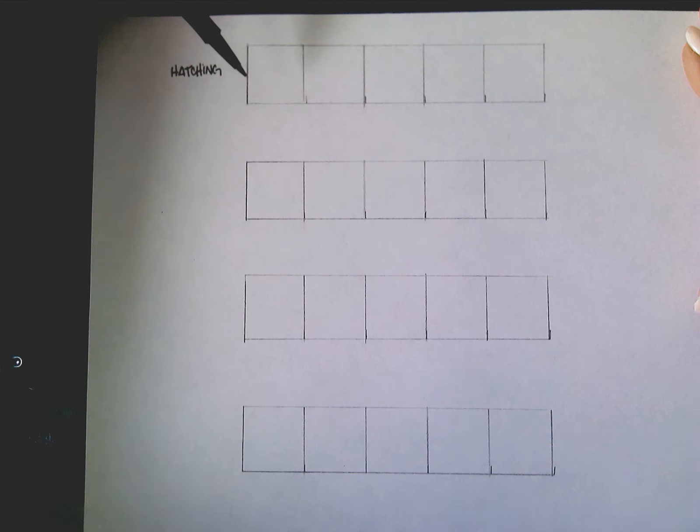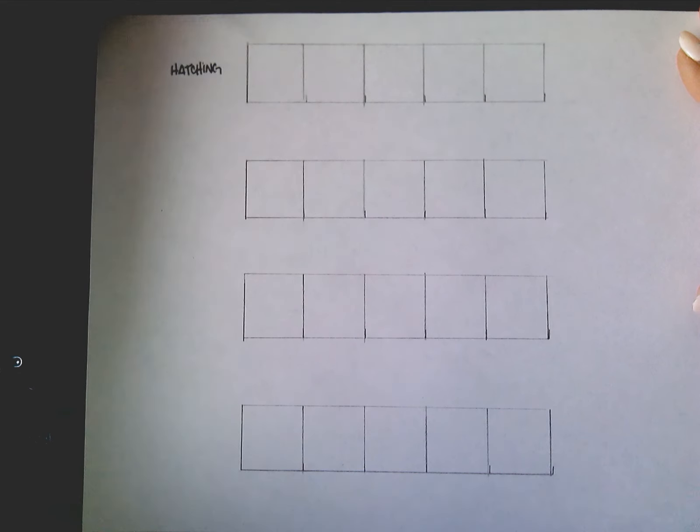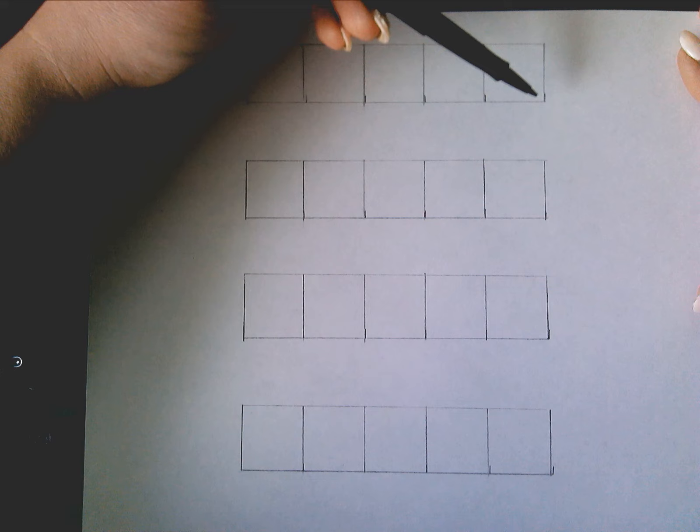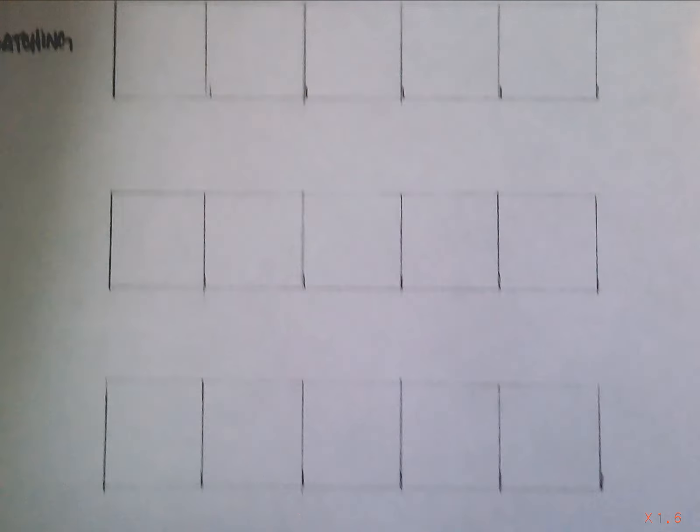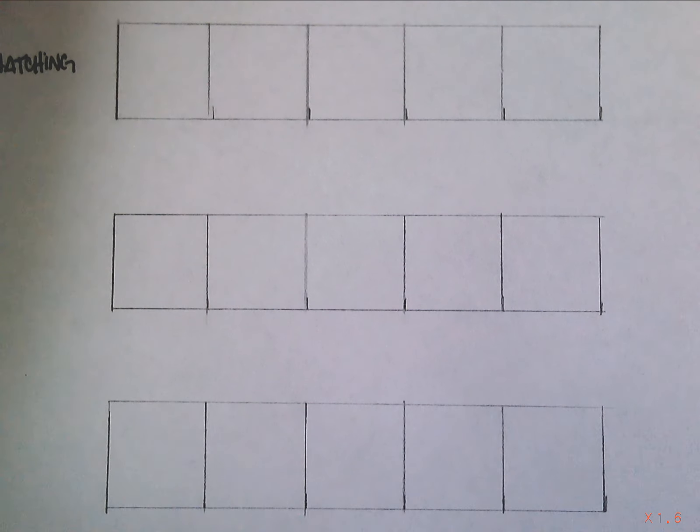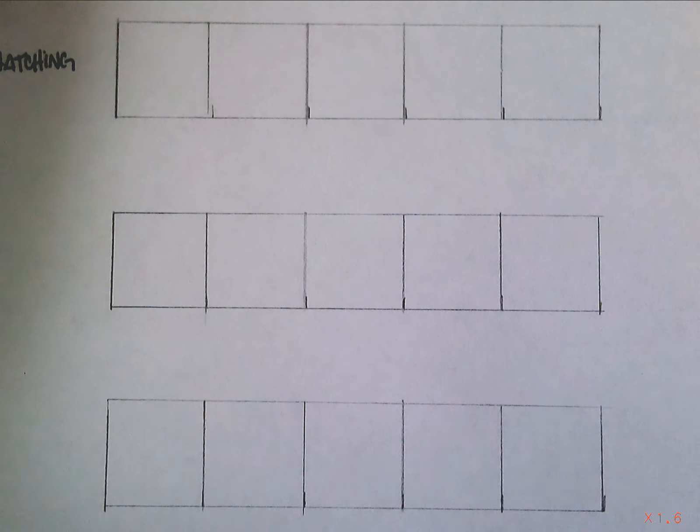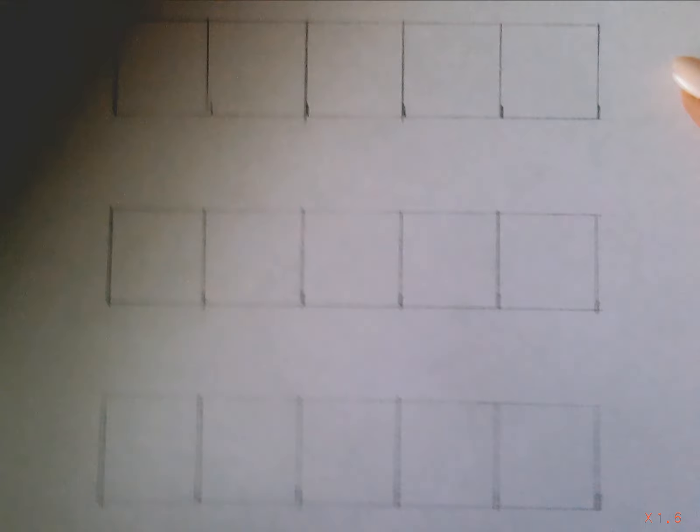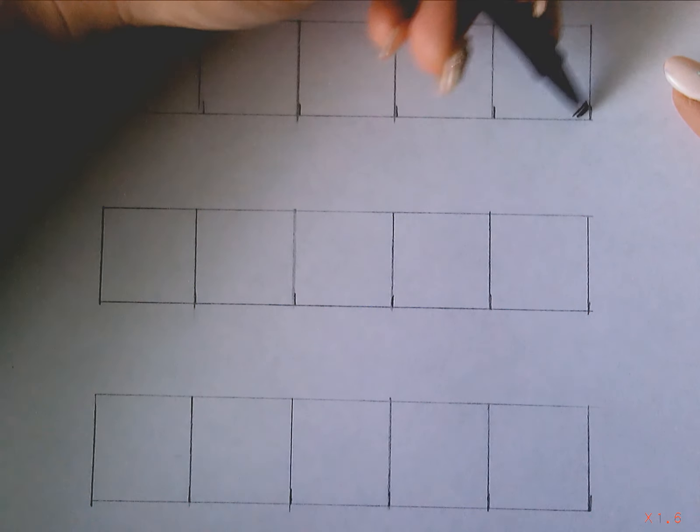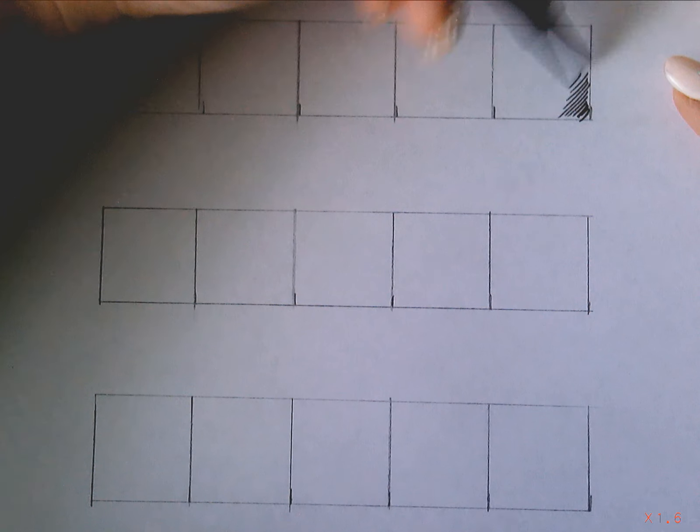Pens, you cannot erase. All right. So they're permanent. So once you make those marks, they're on there. I highly, highly, highly recommend working from right to left, from darkest to lightest. So with hatching, let me zoom in here. With hatching, you're going to start with tiny little marks. Doesn't matter what direction you choose. It could be horizontal, it could be diagonal, it could be vertical, but all those marks need to be going in the same direction.